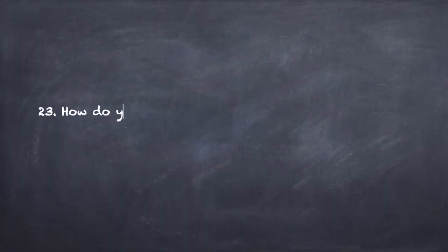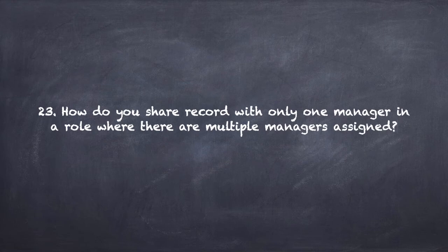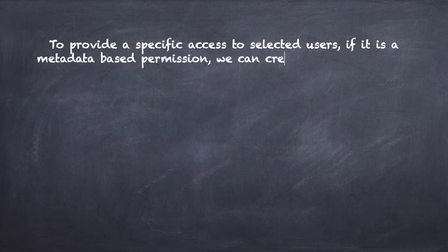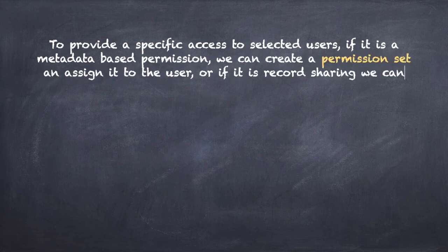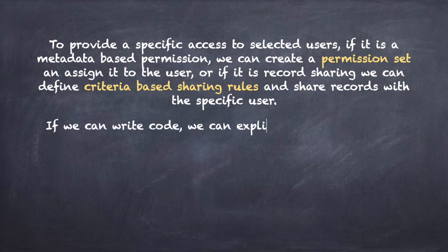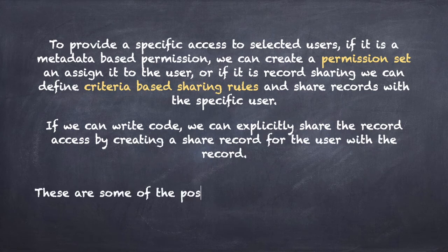Question number 23: How do you share a record with only one manager in a role where there are multiple managers assigned? To provide specific access to selected users: if it is a metadata-based permission, we can create a permission set and assign it to the user. If it is record sharing, we can define criteria-based sharing rules. We can also write code to explicitly share the record by creating a share record for the user.